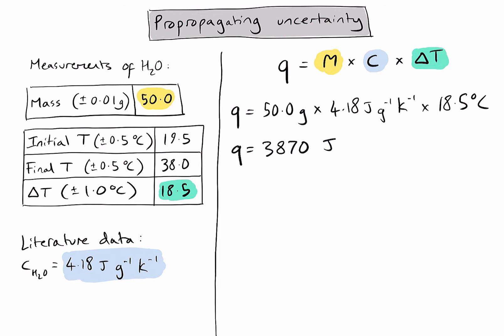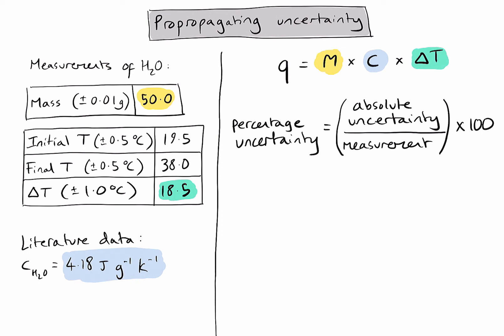Now then, to consider propagating uncertainty in this step of the calculation, we are not adding or subtracting values here, we are multiplying. And when I am multiplying or dividing values in a calculation, I need to add together the percentage uncertainties of any data that I've used from my own measurements. So, what I need to do is convert the absolute uncertainties in my tables into percentage uncertainties. And to do that, I use this formula. Percentage uncertainty equals the absolute uncertainty divided by the measurement value multiplied by 100. So let's do that for mass.